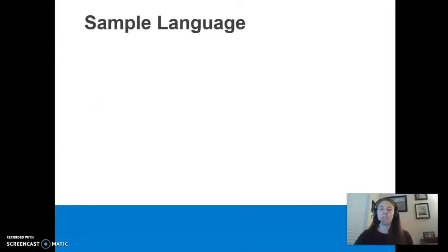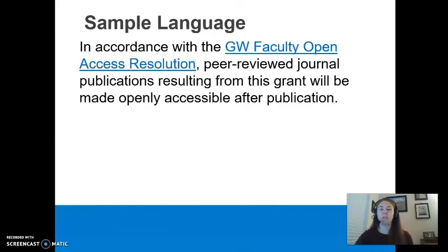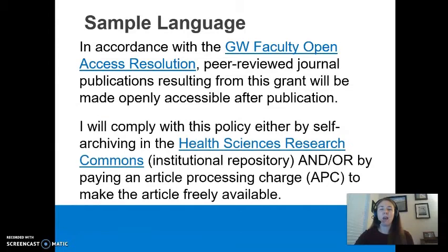Now that you have an idea about how much money you will need to cover APCs when you publish your article, here is some sample language that you can include in your funding proposal. In accordance with the GW Faculty Open Access Resolution, peer-reviewed journal publications resulting from this grant will be made openly accessible after publication. I will comply with this policy either by self-archiving in the Health Sciences Research Commons Institutional Repository and/or by paying an article processing charge to make the article freely available.